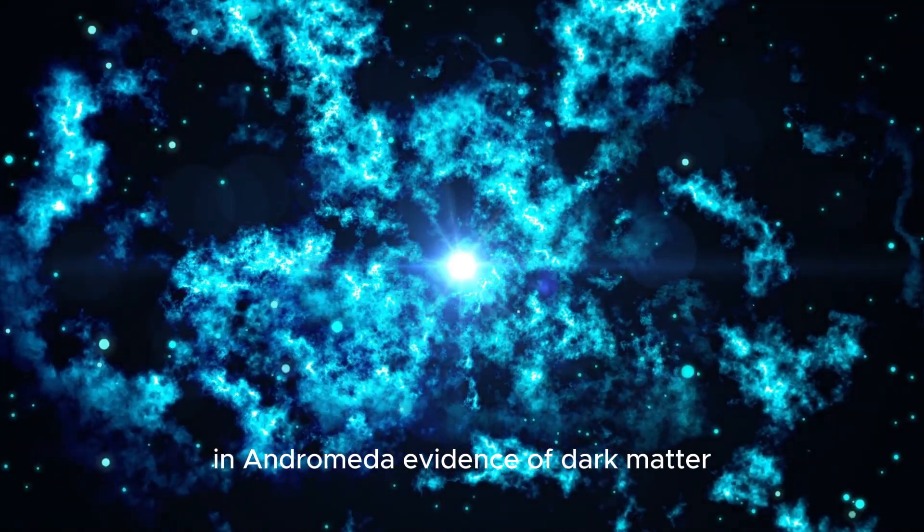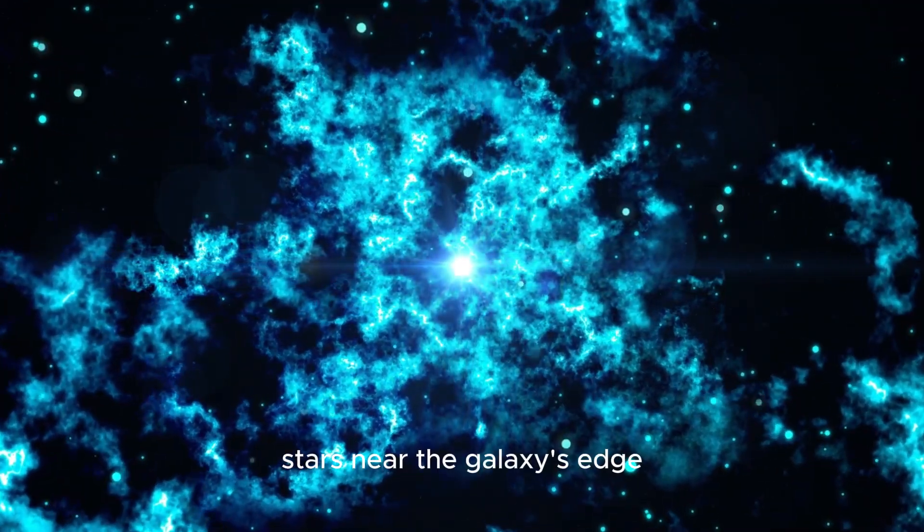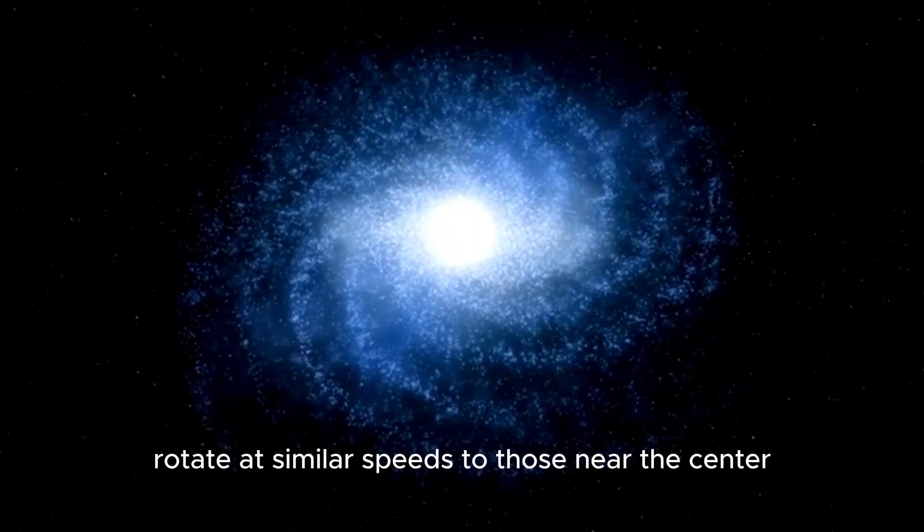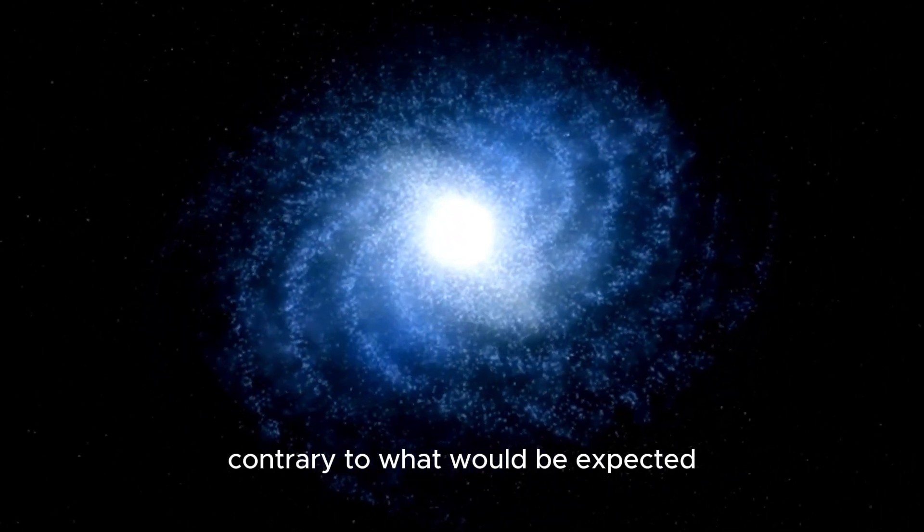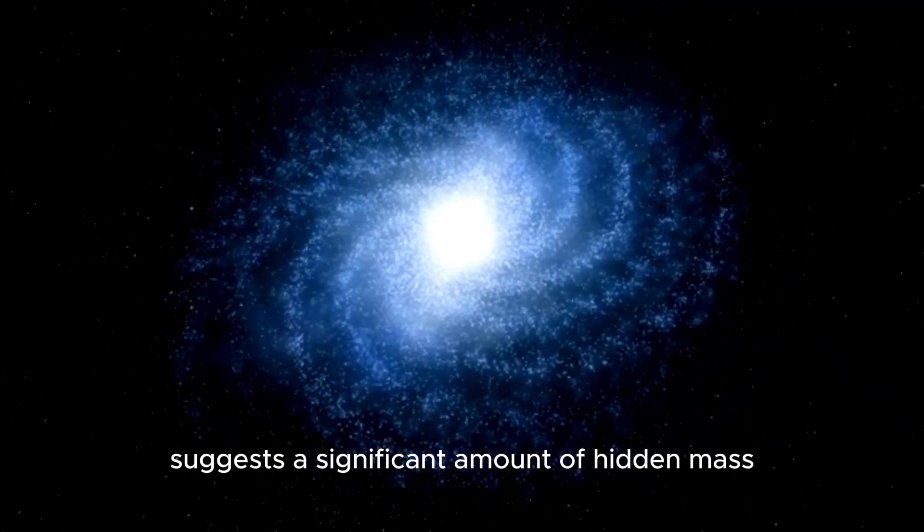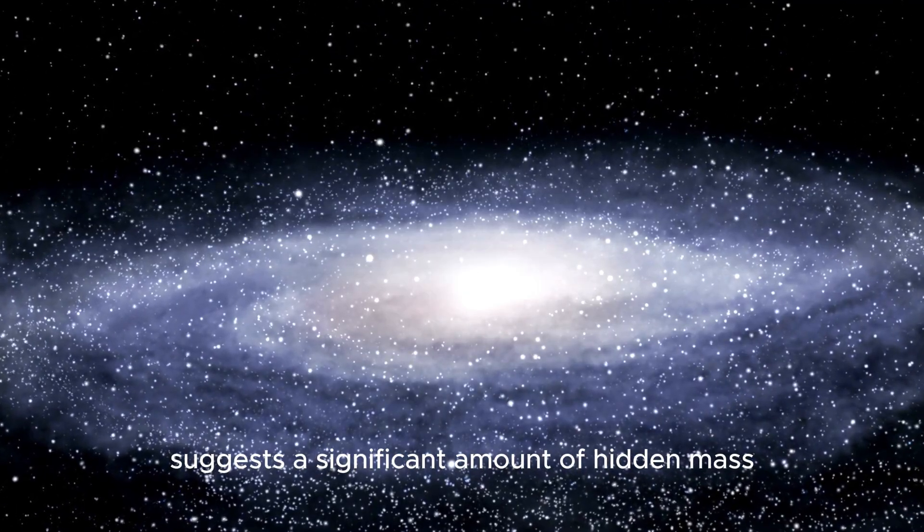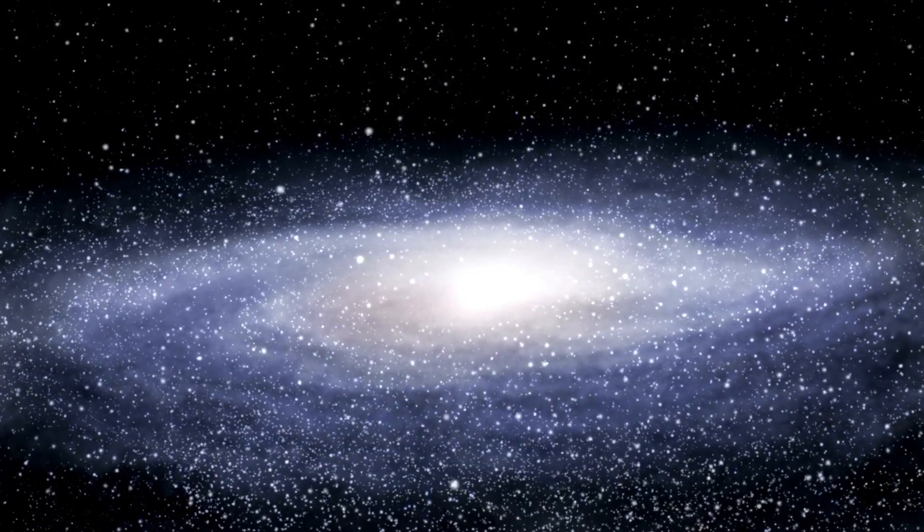In Andromeda, evidence of dark matter comes from the galaxy's rotational speed. Stars near the galaxy's edge rotate at similar speeds to those near the center, contrary to what would be expected if only visible matter were present.